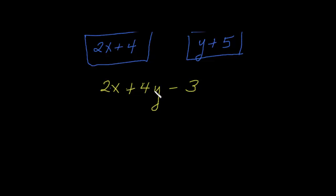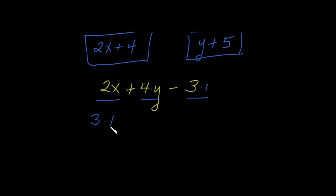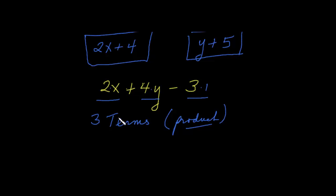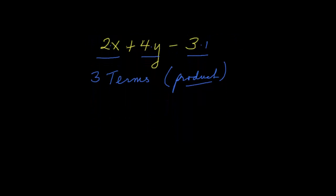Similarly, the 4 is right in front of the y, and that's a product. And by the multiplicative property of 1, any number can always be multiplied by 1, so the 3 can also be viewed as a product. So we have two things being multiplied in each term — that gives us one, two, three terms. Each term represents a product. Another way of counting terms is that they are separated by sums and differences — plus or minus signs. So that's another way of identifying the terms of an algebraic expression.